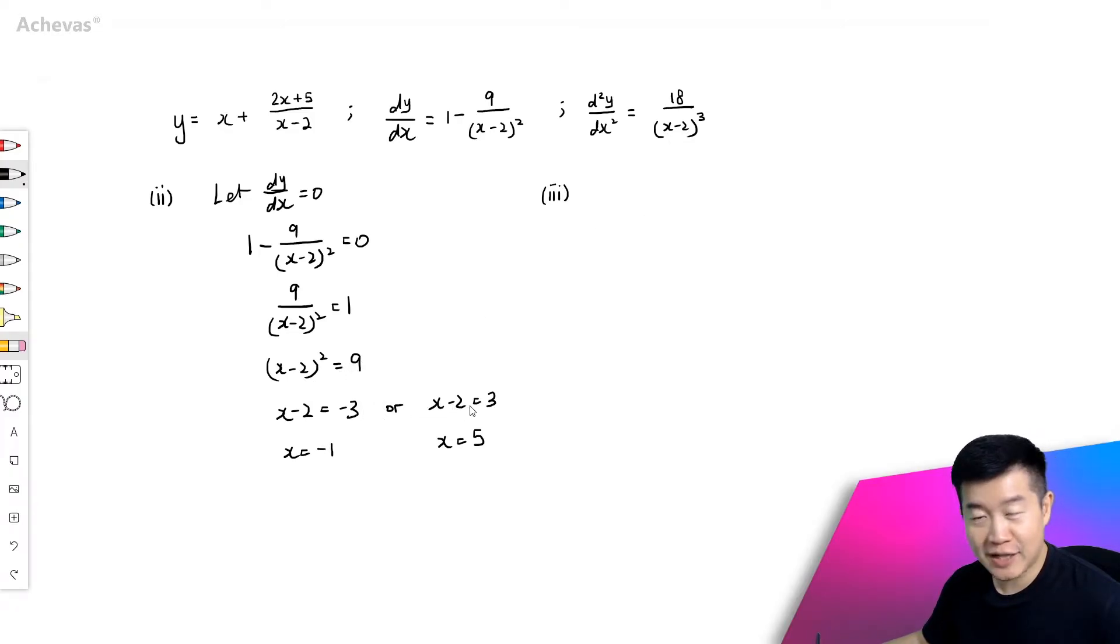To find the nature of these stationary points that we have found in part 2, let's make use of the second derivative test.